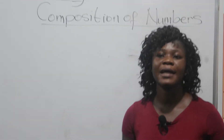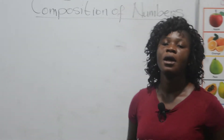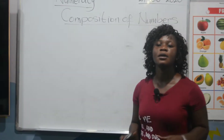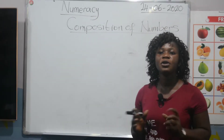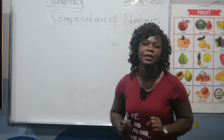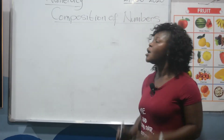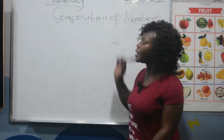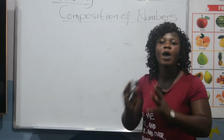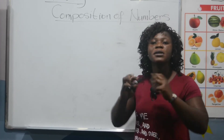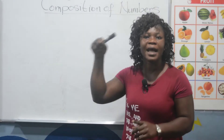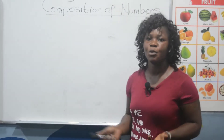Composition of numbers under addition. We've already treated addition as in put together. When we talk about addition, it's calculating two numbers and finding the sum of those two numbers. So today, composition of numbers means we'll give you the sum of that number and you have to compose — finding the two numbers that when added together, you get that number being given. That is simple.